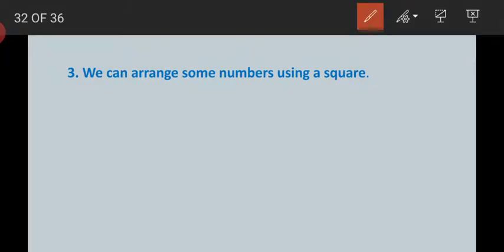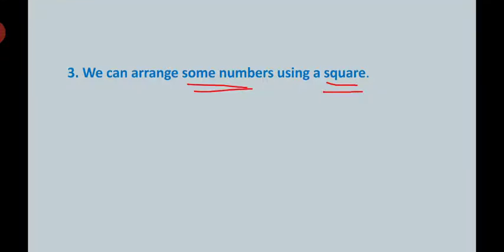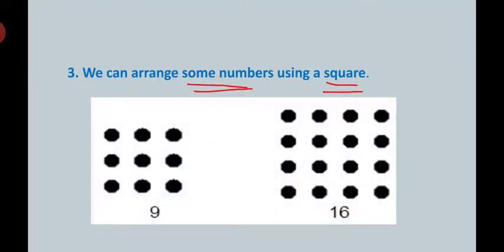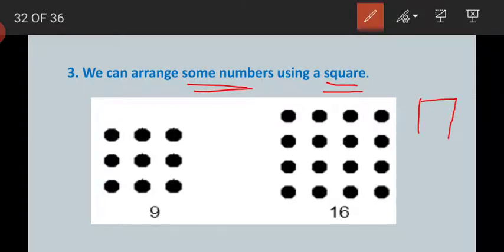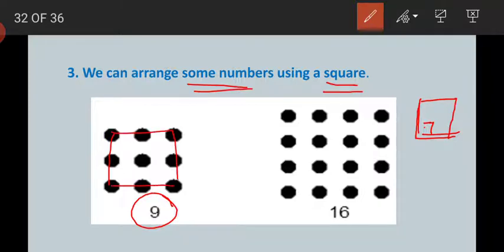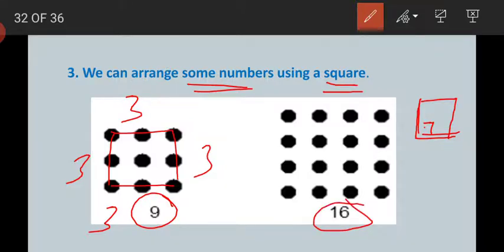Next, we can arrange some numbers using a square. By using a number of dots we can make a square as well. A square is a shape in which all sides are equal and each angle is 90 degrees. By using nine dots we can make a square — there are three dots on each of the four sides. By using 16 dots we can also make a square.